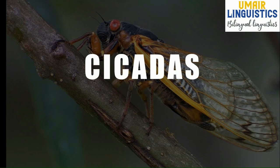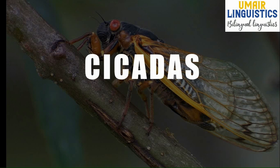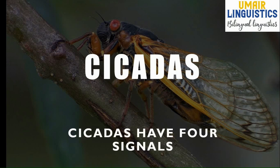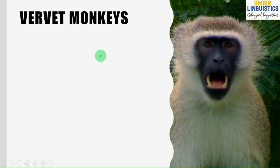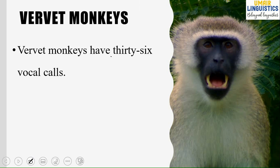Getting back to productivity — cicadas do not have productivity like other animals or insects. Cicadas have only four signals for communication. Another example is vervet monkeys, which have only 36 vocal calls. It seems impossible for other creatures to produce a new signal for novel experiences or events. For example, a cicada or a vervet monkey could not share feelings about 10 years ago, or about tomorrow, or say that after five years they would be a parent of many children — they do not think in this way.